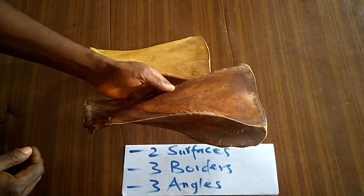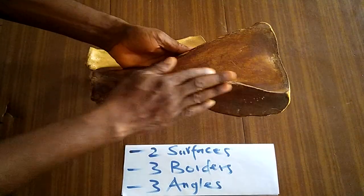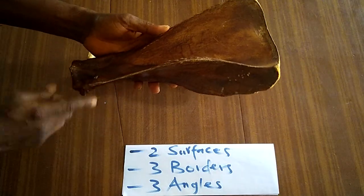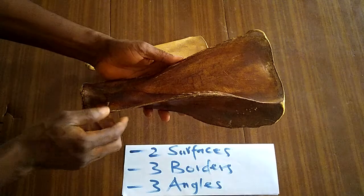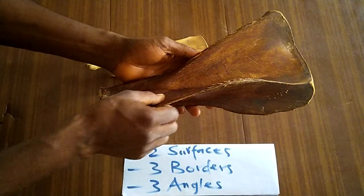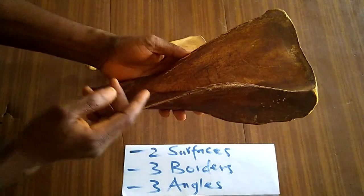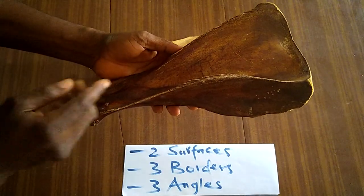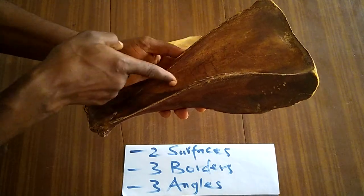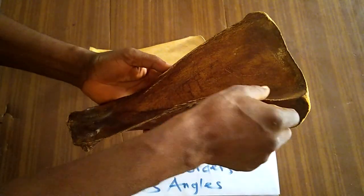The bovine scapula has two surfaces — the lateral surface and the medial surface — three borders, and three angles. The lateral surface is divided into two unequal parts by the spine of the scapula. The larger part is called the supraspinous fossa and the smaller part is called the infraspinous fossa.